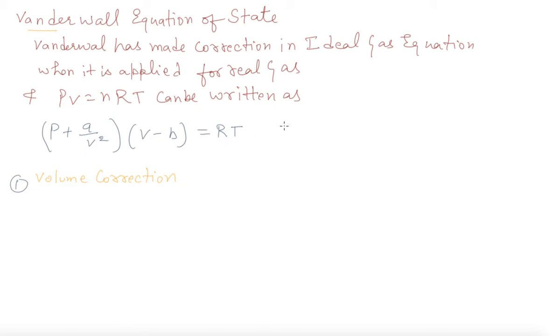And if we go for n number of moles, this equation can be written as P plus A N square by V square multiply V minus NB equals to nRT for n mole of gases. Now he has made two corrections.